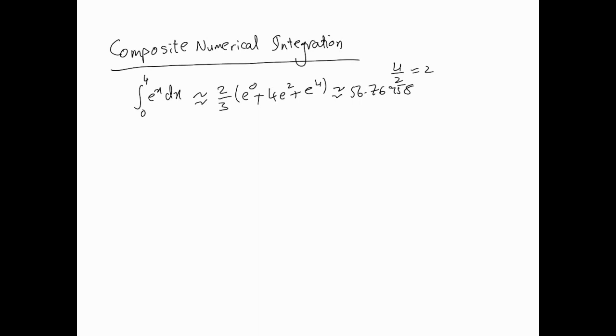And that approximately turns out to be 56.76958. Now actually, this is an easy integral to work out. The exact answer is e^4 - e^0, which is equal to 53.59815. Now, if you can see this and this, there's a huge error. The error is just not acceptable.